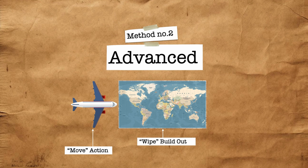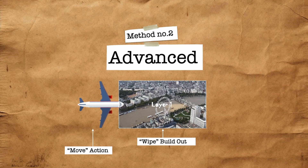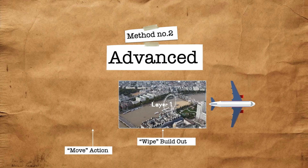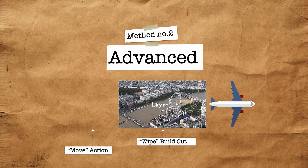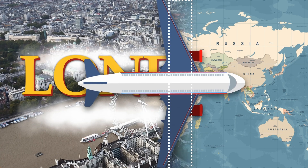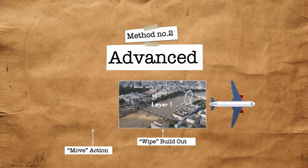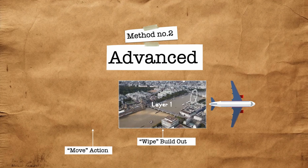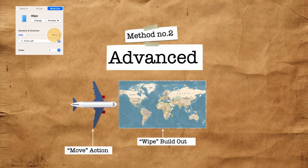That worked. Now let's look at method number two, which is the more advanced method. In this case we have two animations. Instead of a shape, we have the actual map, which is going to have a wipe effect, and the airplane is going to move across. We want to sync them up so that the edge of the wipe on the map is hidden under the wings, giving the illusion that the wings are making the map wipe away.